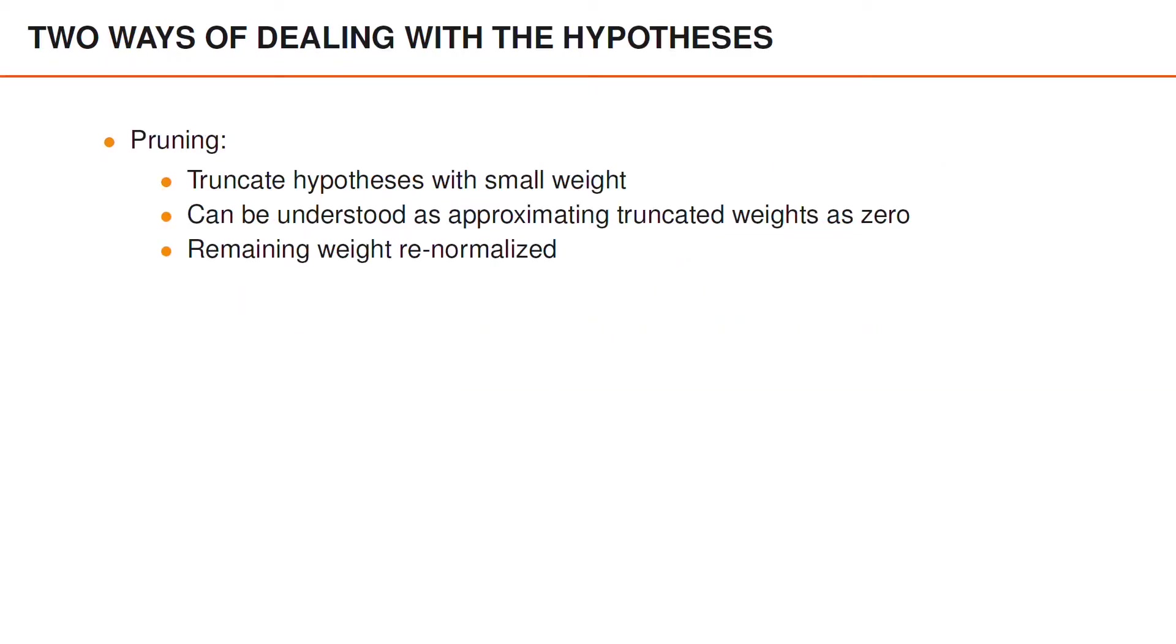Pruning means that we truncate hypotheses with small weights. In other words, we remove hypotheses that have a low probability. This can be understood as approximating the weights of the truncated hypotheses as zero and then renormalizing the remaining non-zero weights.